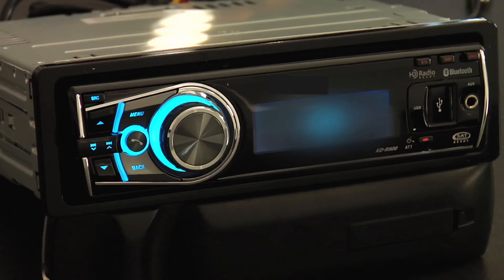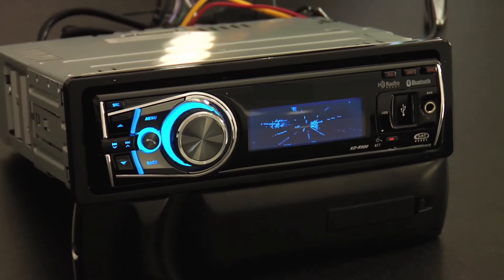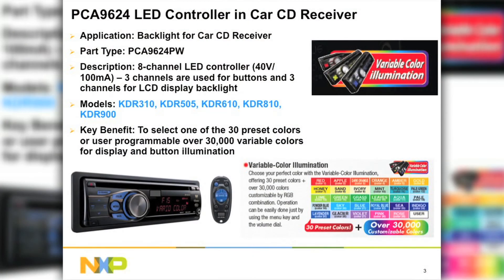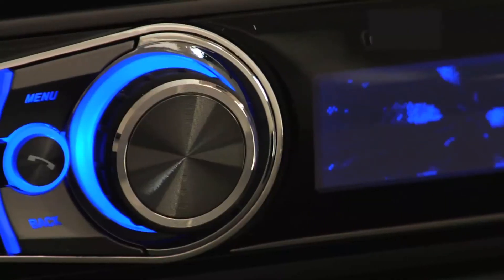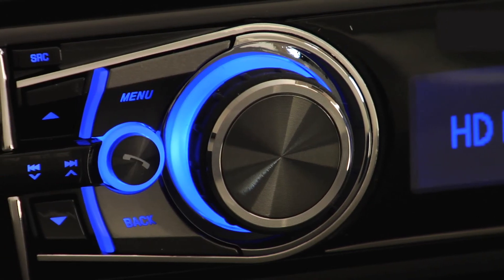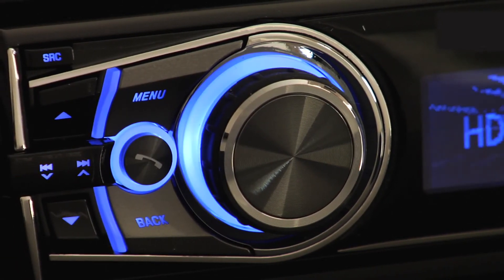In the car radio demonstration kit, four of the PCA9624's 8 channels are used to drive the backlight LED on the LCD, and the remaining four are used to drive the backlight LED on the buttons. The driver can select one of 30 preset colors or create a user-defined color.